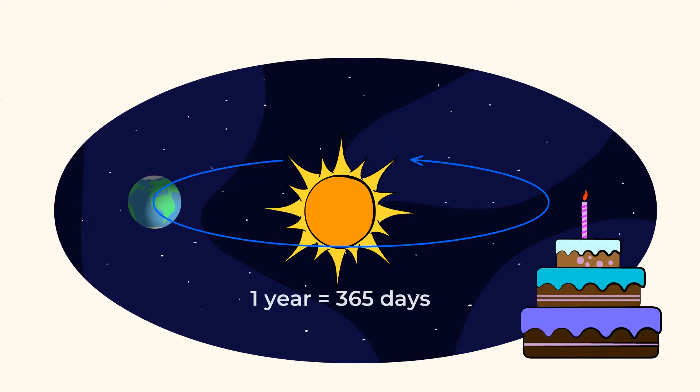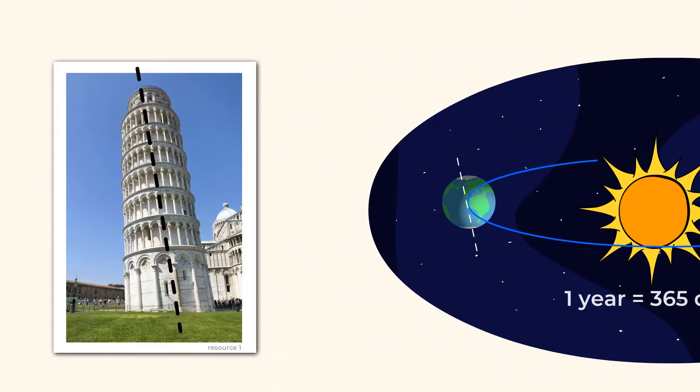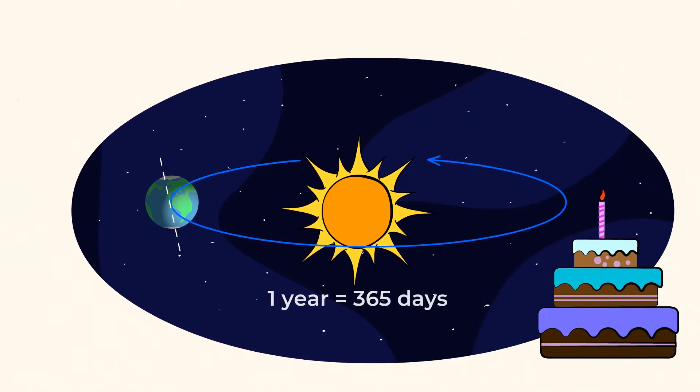And check out the way the Earth is tilted. Tilt is when something is not straight up and down. It's a little bit sideways, kind of like this famous building in Italy. It's always tilted. That tilt makes different parts of the Earth get more sunlight than others. This is what creates the yearly pattern called seasons. Pretty cool, right?